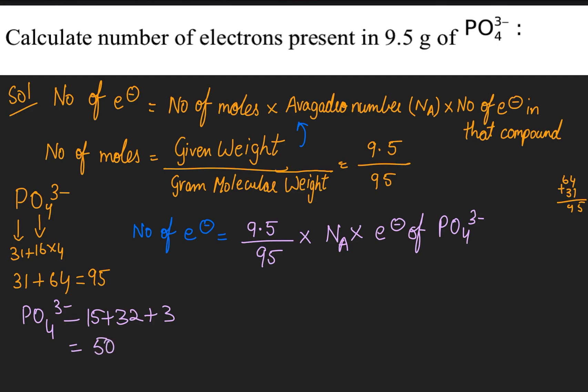So we got 50 electrons. Number of electrons equals 9.5 divided by 95, which is 0.1, times the number of electrons in PO₄³⁻, which is 50.